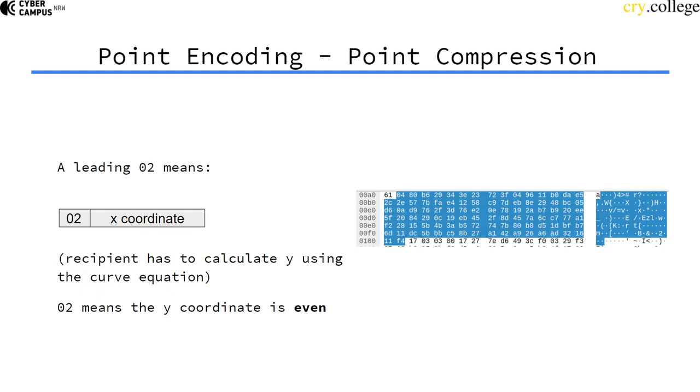So 02 means that the y coordinate is even. We use the x coordinate, compute the y coordinate using the curve equation, then check for the y coordinate and use the even one.